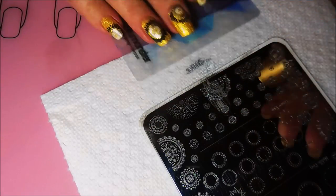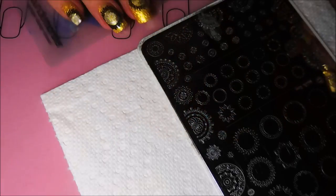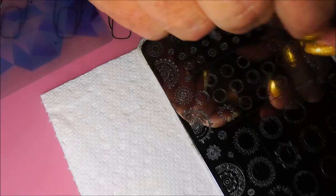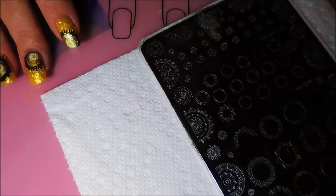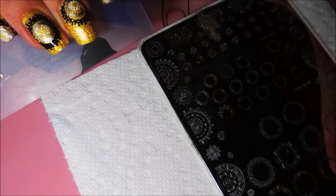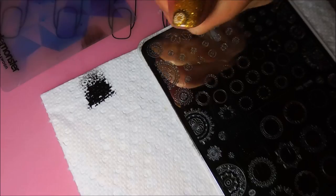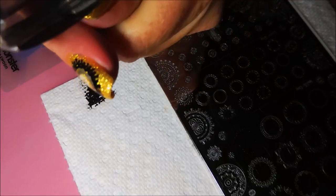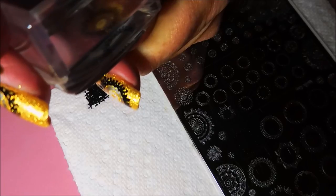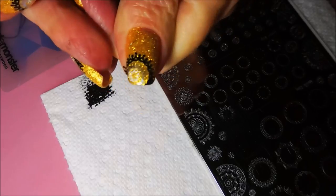Next is the black stamping polish and I will be using this image up here. Originally I was going to do a bee manicure, just bumblebees, but I don't know, it just wasn't talking to me so I decided to go ahead and do this one instead. And there we go.